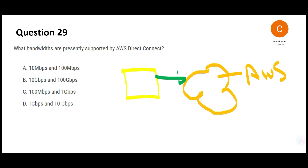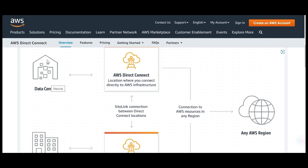The question is asking what is the bandwidth of this connection — this green arrow between on-prem and AWS cloud. Here is another diagram: this is your on-premises data center, you plug Direct Connect here, and this is your AWS region, so you have Direct Connect in between for two-way communication.